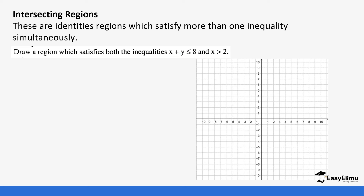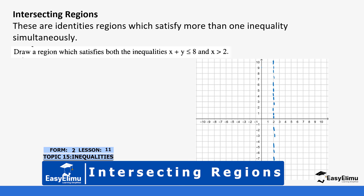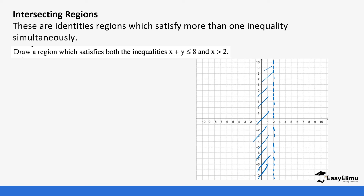We will start with the simplest one, which is x is greater than 2. We go to where 2 is on the graph, and since it's not equal to, the line is going to be dotted. We want values that are greater than 2, so all values less than 2 are unwanted. That's the first part.